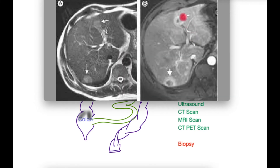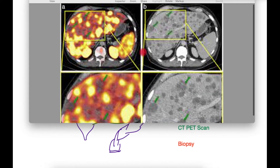An MRI scan is more accurate in outlining metastases in the liver in terms of their number and distribution as well as likely diagnosis, as seen in this picture. Lastly, CT PET scans are commonly performed where two scans are superimposed on each other — one using glucose molecules as markers with a little radioactivity picked up on a gamma camera, combined with a CT scan.